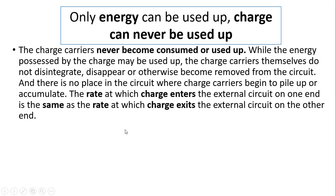Again, only energy can be used up; charge can never be used up. So there's a misconception: when a battery is not working, it's because charge is used up. That's not true. That's because the battery doesn't have energy to push the charge anymore. So charge carriers never become consumed or used up—that's because the atoms cannot be consumed or used up. While the energy possessed by the charge may be used up, the charge carriers themselves do not disintegrate, disappear, or otherwise become removed from the circuit.